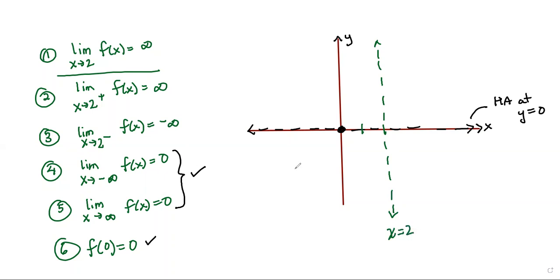But as we approach two from the left side, we're going down to negative infinity. So I would say that we could draw a graph something like this. We have a horizontal asymptote and then a vertical asymptote. So something like that.